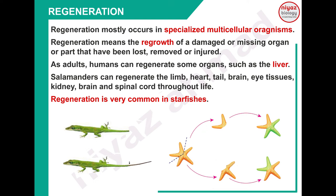Salamanders میں regeneration کی property بہت زیادہ ملتی ہے - اس میں generally limb، ہاتھ پیر، heart، tail، brain، eyes زیادہ تر organs lifetime regenerate کرتے رہتے ہیں - ٹوٹتے رہتے ہیں اور بنتے رہتے ہیں۔ Starfish میں بھی regeneration بہت common ہے - اگر ایک starfish کو دو ٹکڑے میں توڑ دیا جائے تو دونوں ہی parts نیا starfish بنا لیتے ہیں۔ Lizard کا example - اگر lizard کی tail ٹوٹ جاتی ہے تو وہ پھر سے اپنی tail regenerate کر لیتا ہے۔